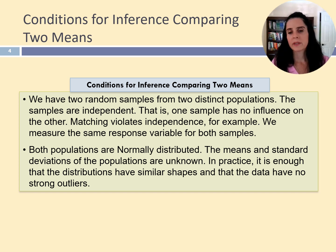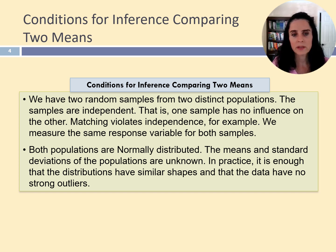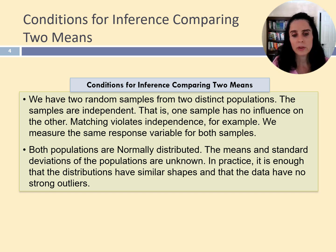Before conducting any statistical analysis, we must make sure that we meet two assumptions. The first is that the two samples were randomly selected and are independent from one another. The second assumption is that the variable we're measuring has a normal distribution in both populations. However, in the sample, the distribution does not need to be perfectly normal. Usually, if we have a symmetrical distribution and there are no strong outliers, we can use the t-procedures to make inferences.